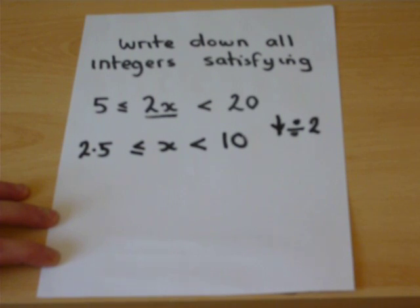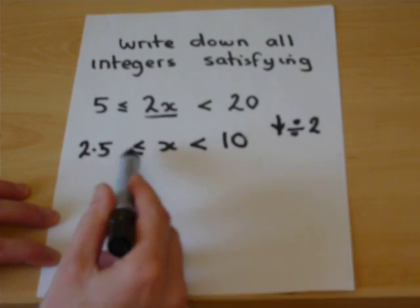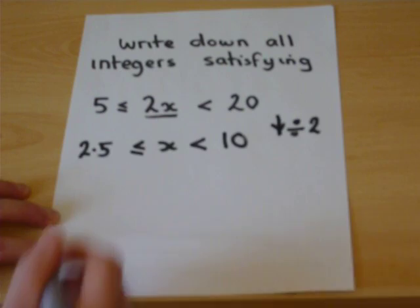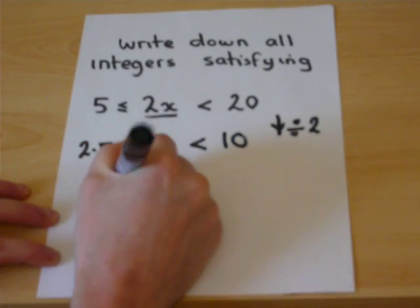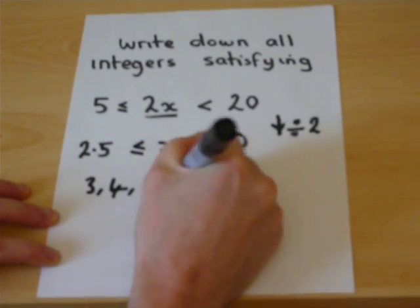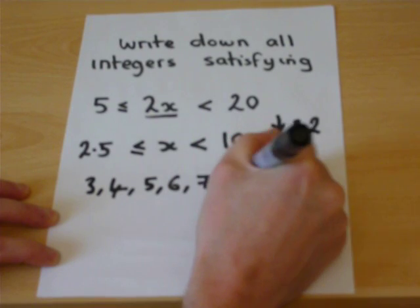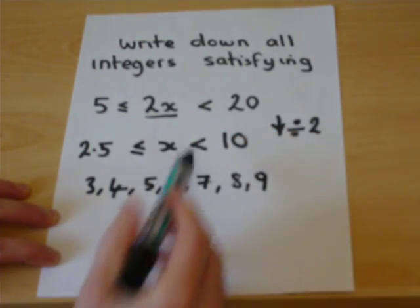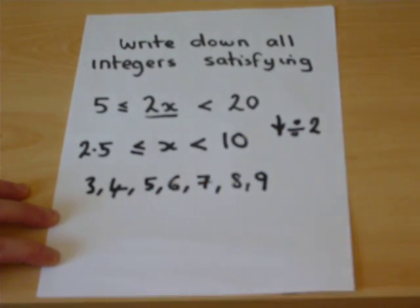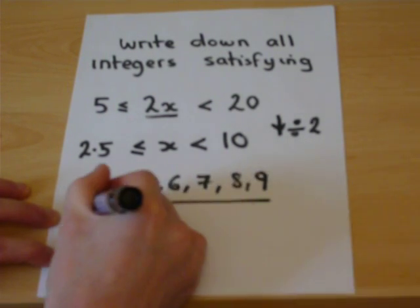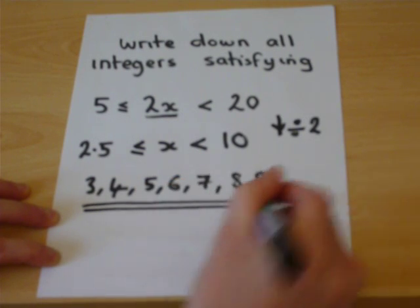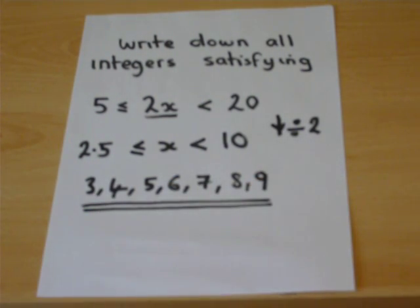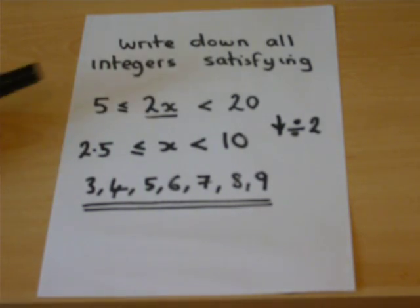So I want all whole numbers greater than or equal to 2.5, so 3, 4, 5, 6, 7, 8, 9 — but I don't want to include 10, so I stop at 9. So those would be the set of numbers satisfying that particular inequality, and of course they are integers.